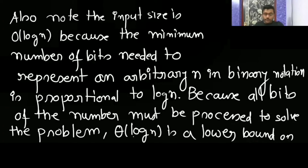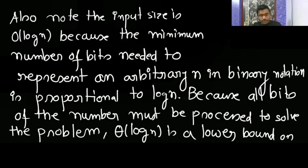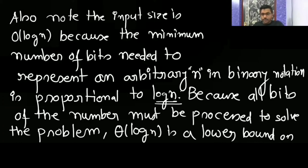The lower bound is also going to be O(log n), because the size of the input for any number is log n. When you apply binary search, you still need to divide by 2 and process all the bits of the number n. That is why at least log n is required. The input size is O(log n) because the minimum number of bits needed to represent an arbitrary n in binary notation is proportional to log n, and all bits must be processed to solve the problem. Θ(log n) is a lower bound.